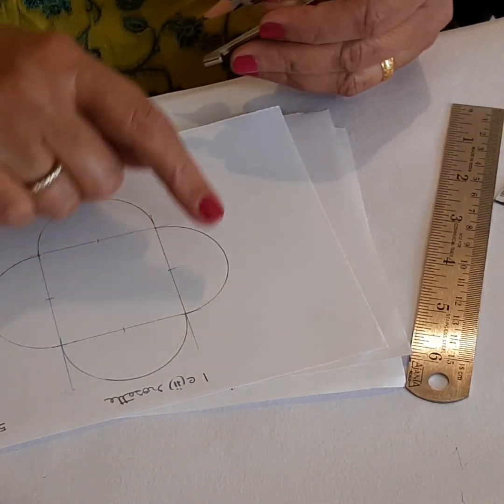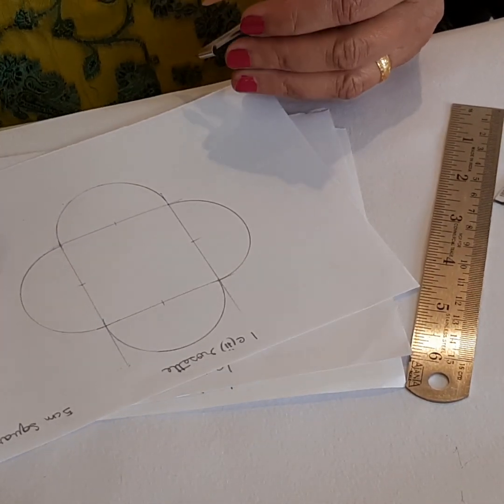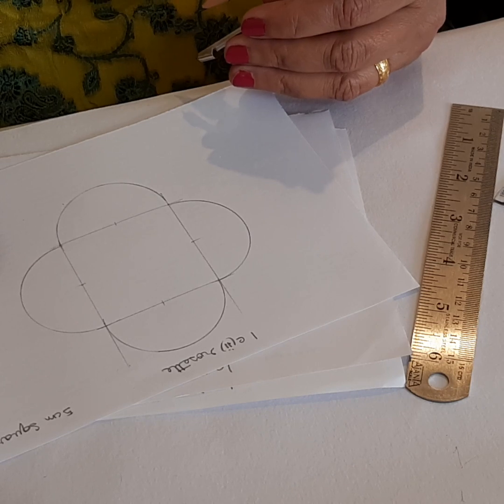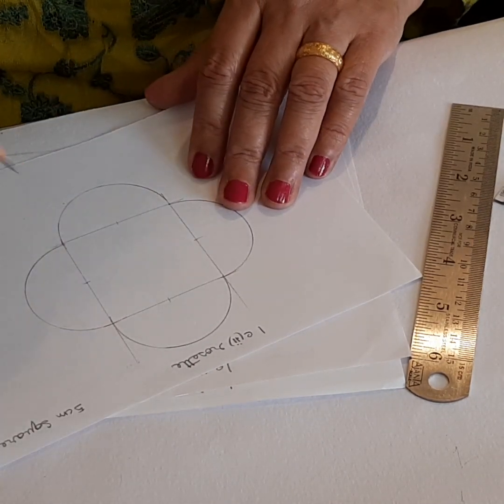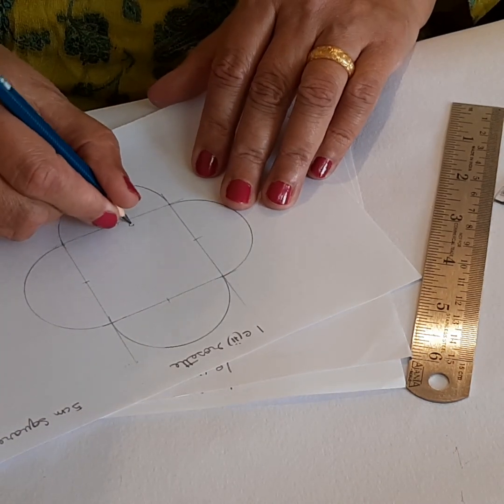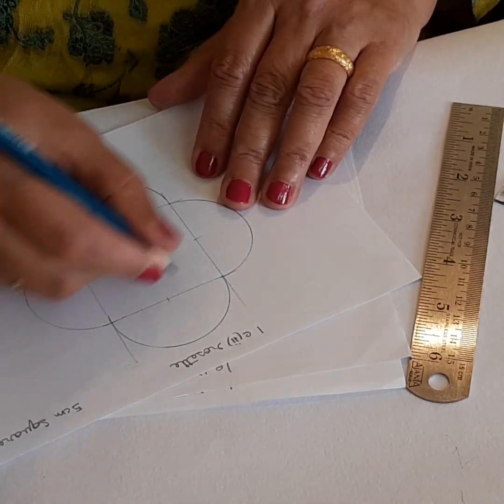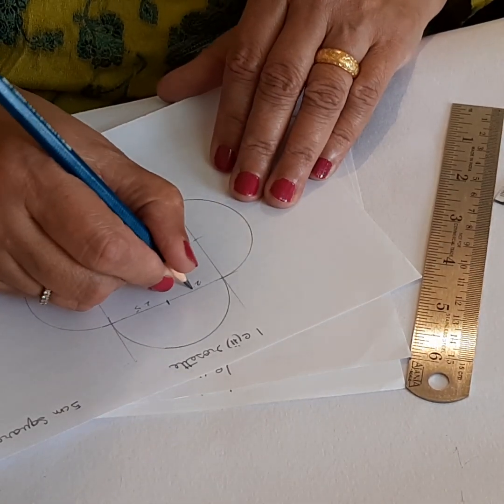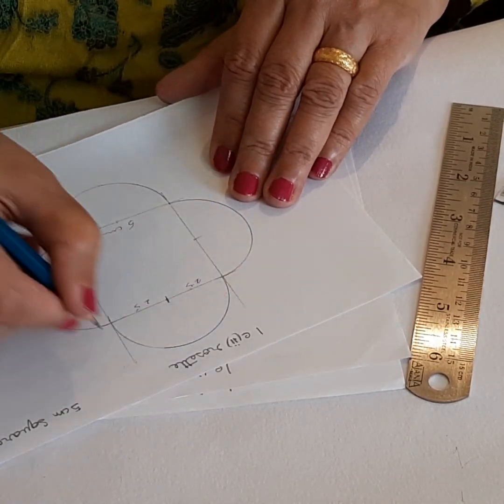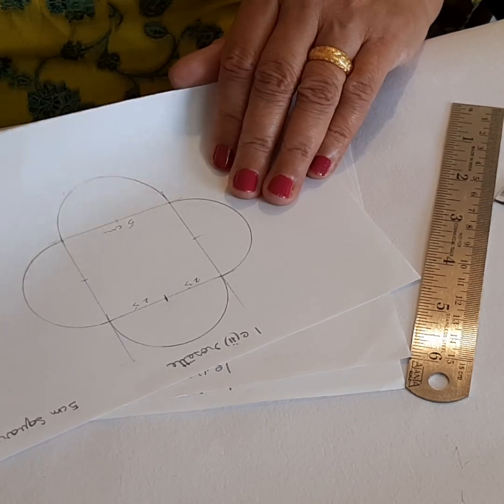And I get a rosette. So this is how you make your rosette. You make a 5 cm square first, and then you are going to mark off 2.5 cm, the midpoints, and then you will draw the rosette.